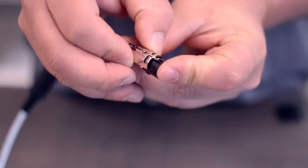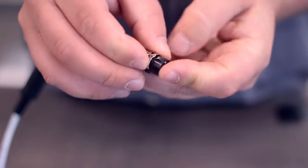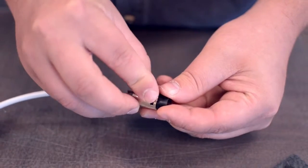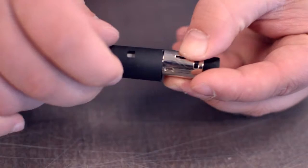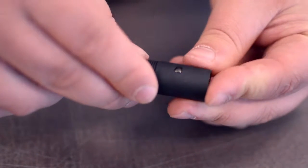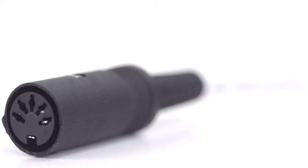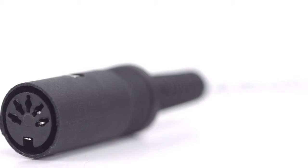After you have soldered the necessary points on the connector, place the metal shell around the pins. Squeeze the strain relief tab onto the cable jacket and slide up the boot. Congratulations, you have successfully installed the 5-pin DIN female solder connector.